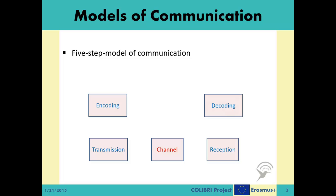To give these items specific notations: W represents the actual message, Xt represents the bitstream, and Nt represents the signal. At the receiving end, N̄t represents the received signal, Yt represents the received bitstream, and W̄ represents the decoded message. In the best case, we want W̄ to equal W, meaning the receiver has received the message correctly. Note that the intermediary items are given with the index T, meaning these are streams over time.